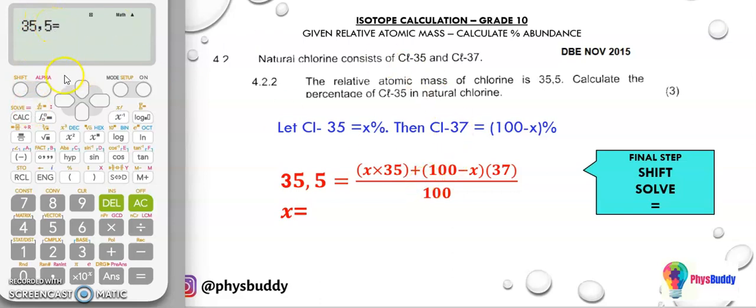We now have a fraction so I go to the fraction button. I open my bracket and I want x so I'm pressing alpha x and that is the x that we use. Multiply by 35 close bracket plus open bracket 100 minus alpha x.